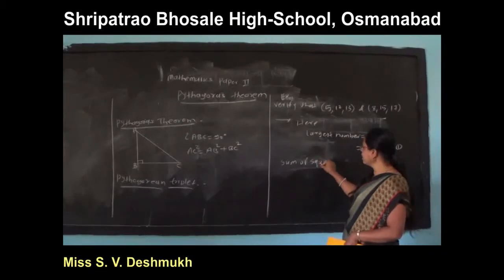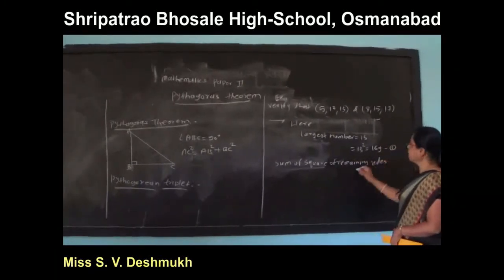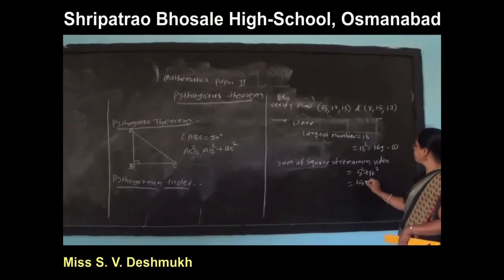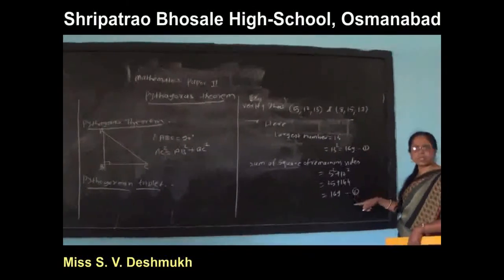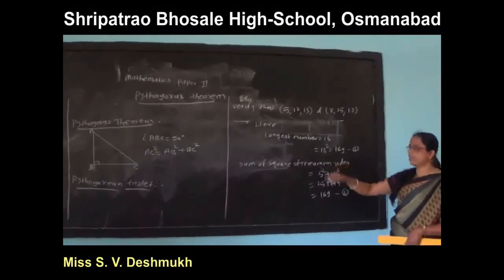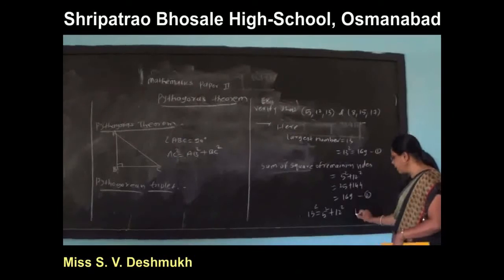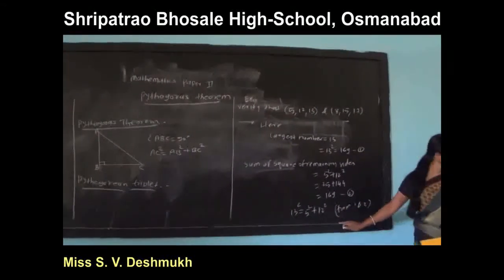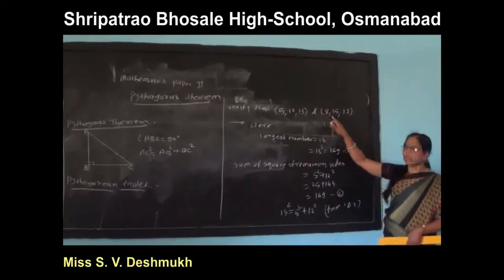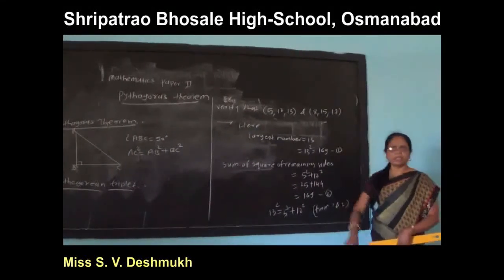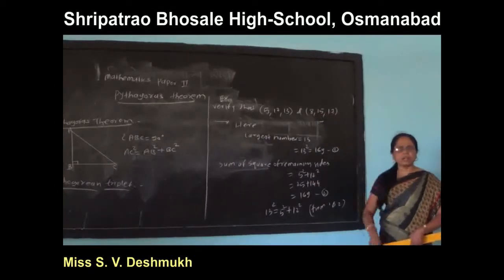The sum of squares of the remaining sides is equal to 5 squared plus 12 squared, that is 25 plus 144, which equals 169. This is equation two. Since the right hand sides of equation one and two are equal, 13 squared equals 5 squared plus 12 squared. Therefore 5, 12, 13 and also 8, 15, 17 are Pythagorean triplets.